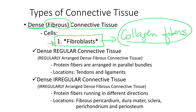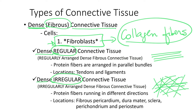These collagen fibers can be arranged parallel to each other — regularly arranged — giving rise to dense regular connective tissue. Or the collagen fibers can be disorganized, running in different directions, giving rise to dense irregular connective tissue. If fibers are arranged in a specific direction, the tissue is strong in that one direction but not in every direction. If fibers run in all different directions, the tissue is relatively strong in all directions.